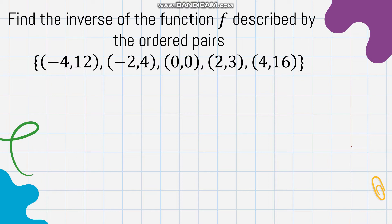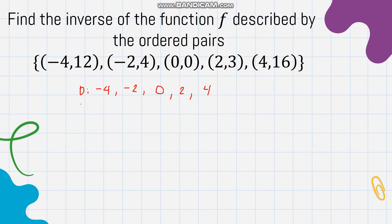Let's try this example: find the inverse of the function f described by the ordered pairs (-4, 12), (-2, 4), (0, 0), (2, 3), (4, 16). If you are given ordered pairs and need to find the inverse, all you have to do is interchange the values of x and y. The domain values are -4, -2, 0, 2, and 4, and the range values are 12, 4, 0, 3, and 16.